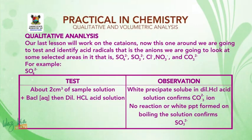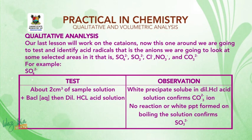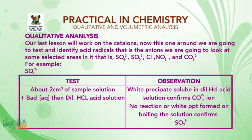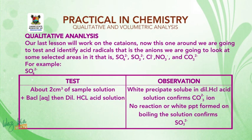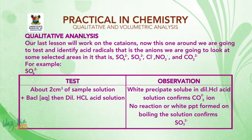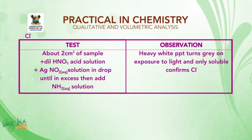When you have a test sample, take about 2 cm³ and add dilute HCl solution in drops, then add BaCl₂. You will get a white precipitate which is insoluble in dilute acid — this confirms SO₄²⁻. For SO₃²⁻, you get a white precipitate which is soluble in dilute HCl. For the chloride ion, the two major reagents are HNO₃ and AgNO₃.